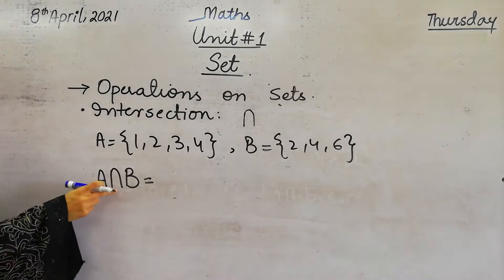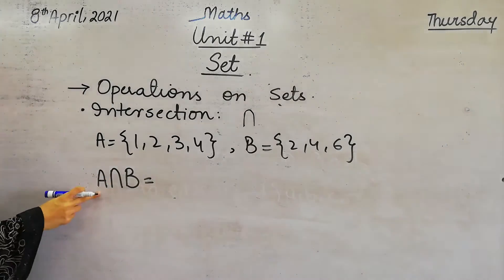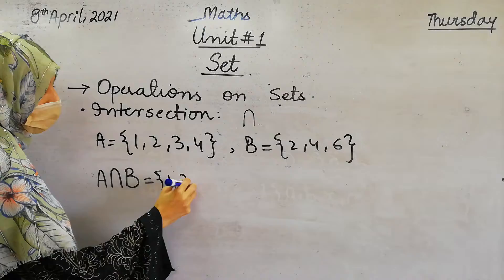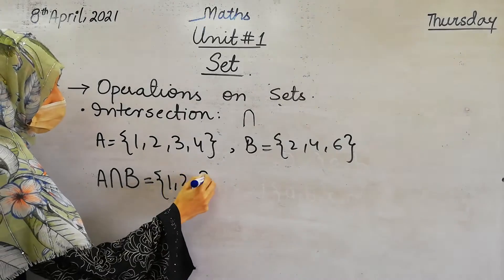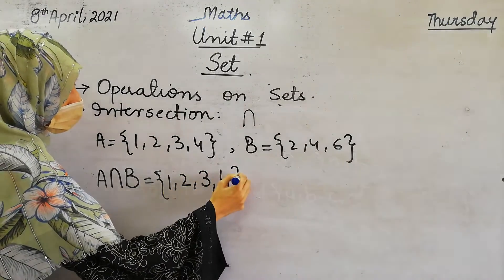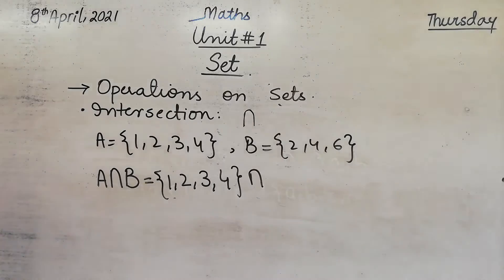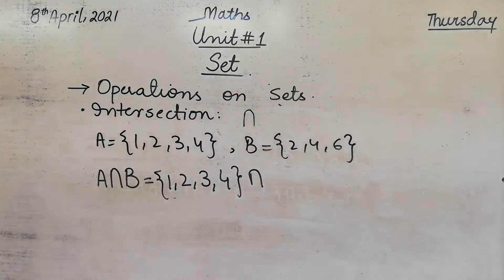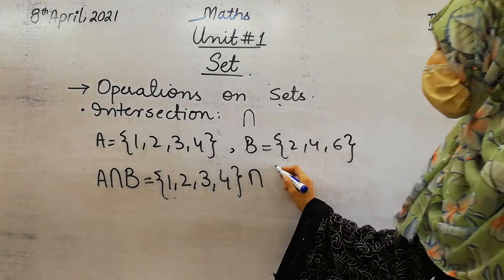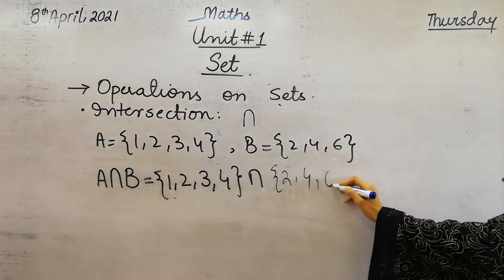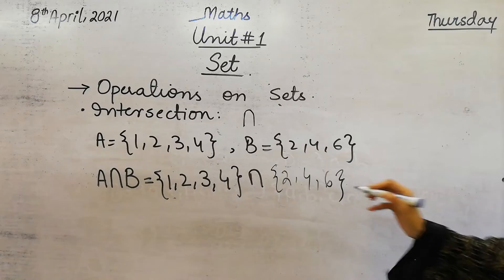A intersection B. First of all, we will write the elements of set A: 1, 2, 3, 4. Then we write the intersection sign, followed by the elements of set B: 2, 4, 6.